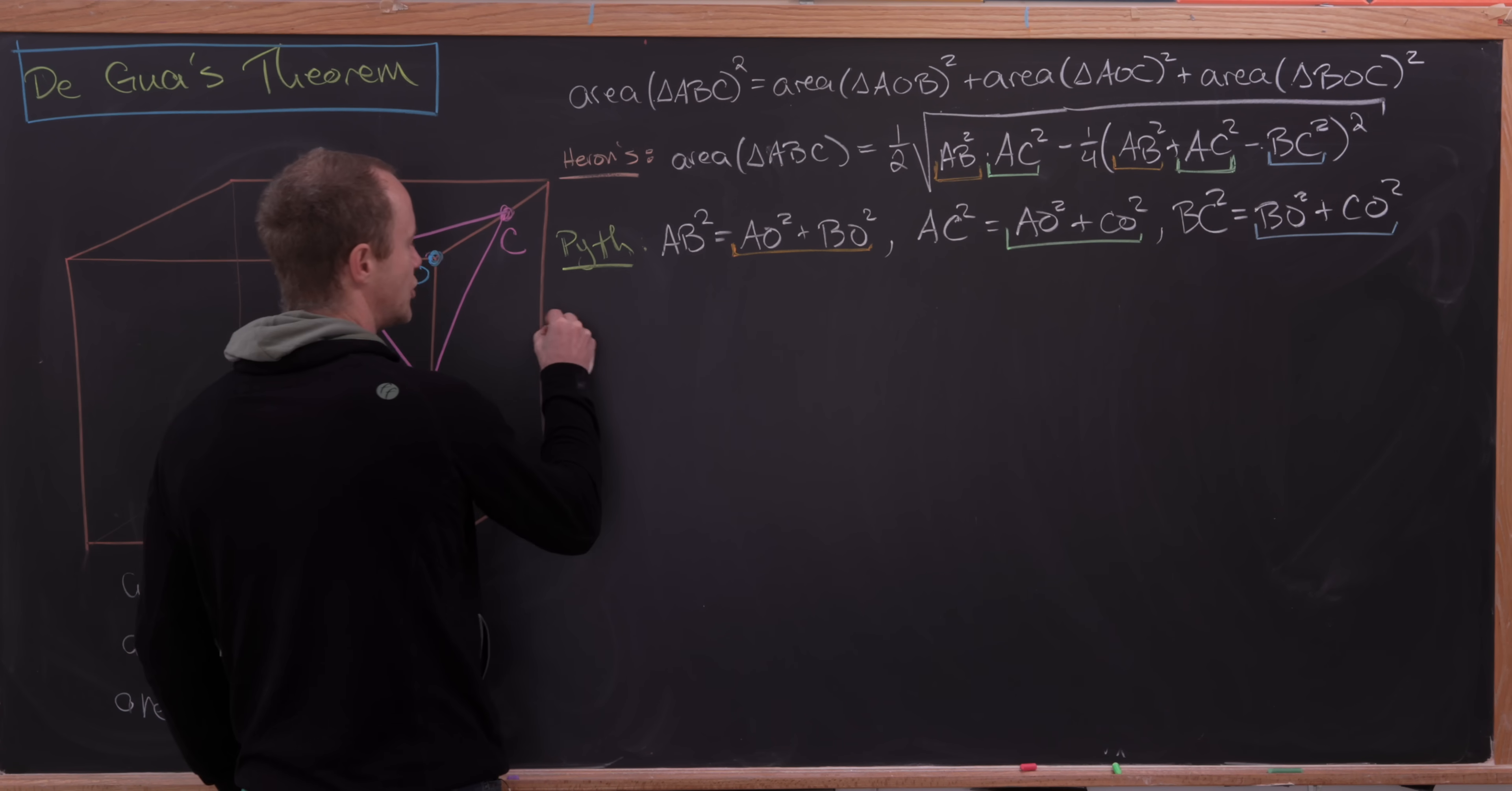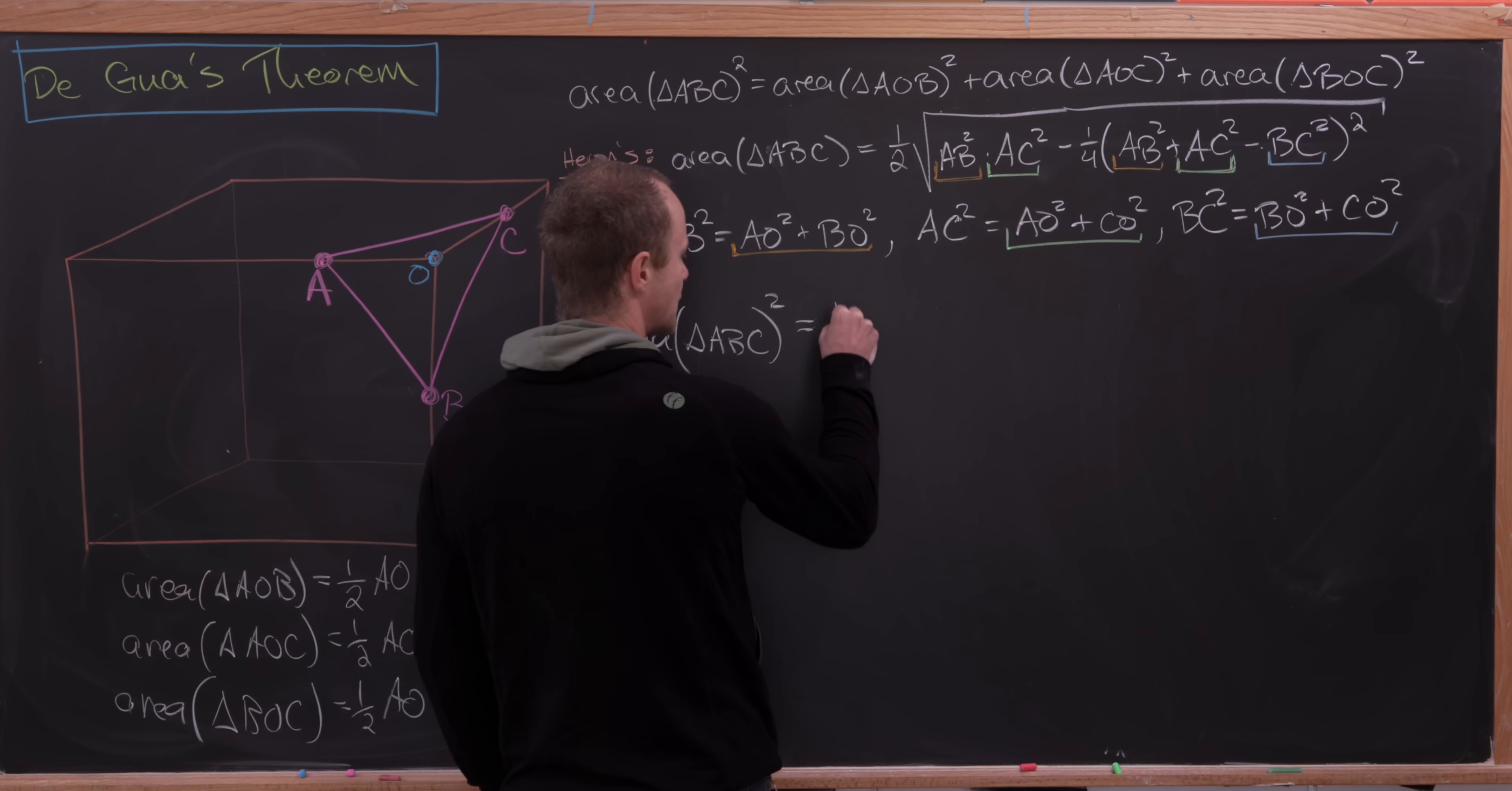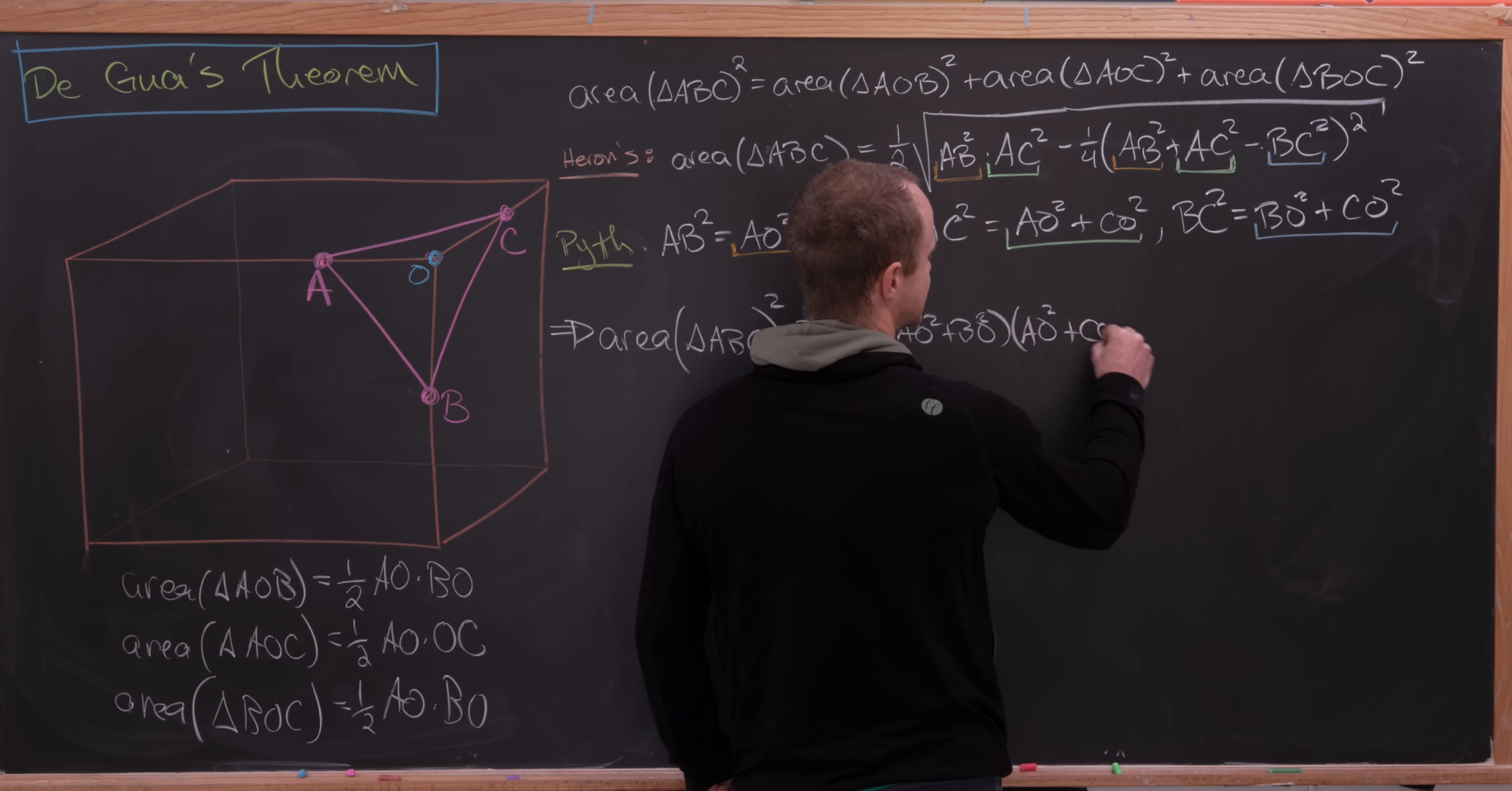Okay, so using all of these things, we can easily calculate this area of the triangle ABC squared in terms of maybe more useful pieces. So we'll have one quarter times, so it's a quarter because we're squaring it. Now the square root's gone. We'll have AB squared times AC squared. So let's see, that'll be AO squared plus BO squared times AO squared plus CO squared.